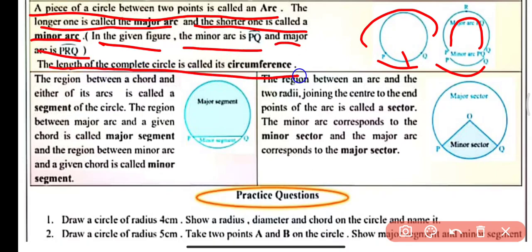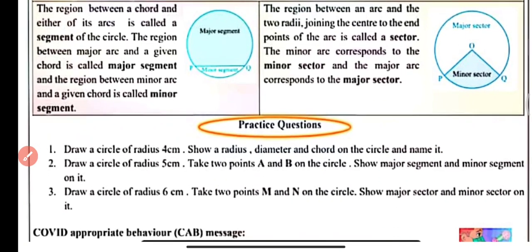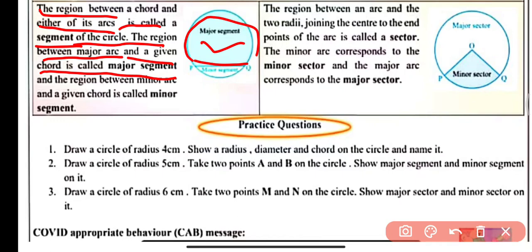The length of the complete circle is known as the circumference or perimeter of the circle. The region between a chord and either of its arcs — whether major arc or minor arc — is called a segment of the circle. The region between the major arc and the chord is known as the major segment, and the region between the minor arc and the chord is known as the minor segment.